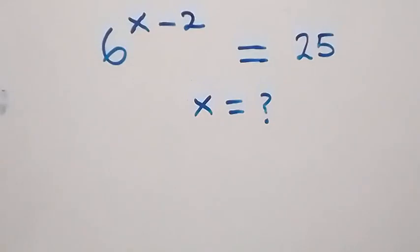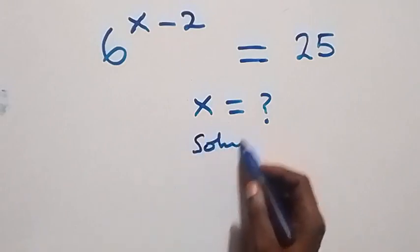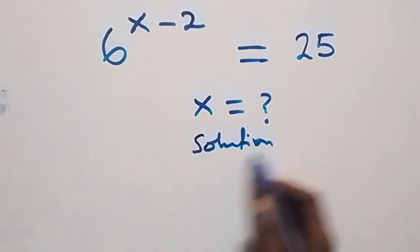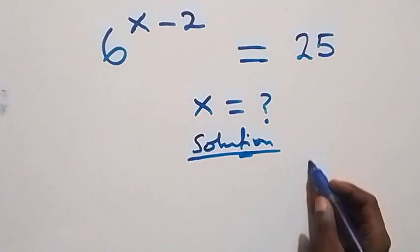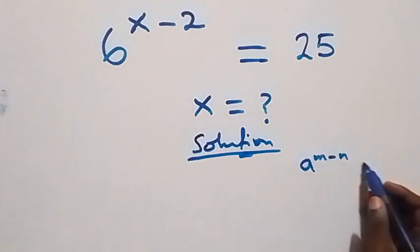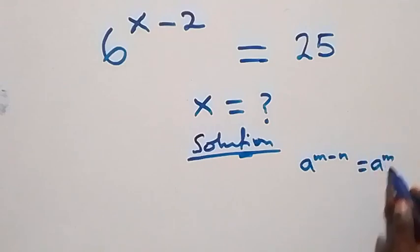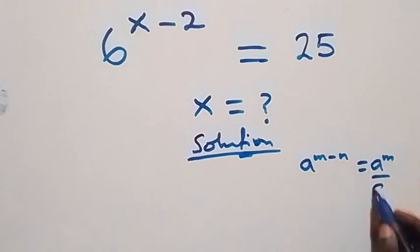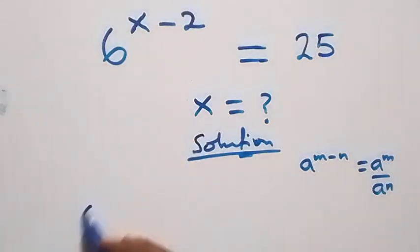Hello, you are welcome. We will solve this exponential equation. The solution follows from the rule: a raised to power m minus n equals a raised to power m over a raised to power n. Using this, we can rewrite the equation.